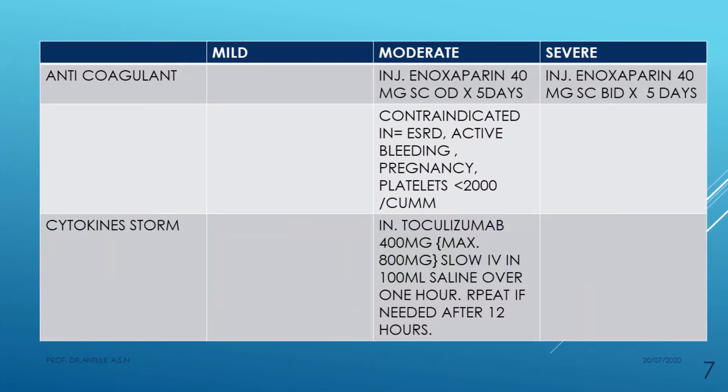Cytokine storm occurs when the immune system becomes hyperactive and releases cytokines abundantly. In moderate to severe cases with cytokine storm, injection tocilizumab is used — 400 mg (maximum 800 mg) slow IV in 100 mL saline over one hour. It can be repeated after 12 hours if needed.